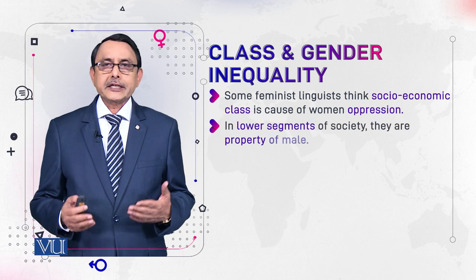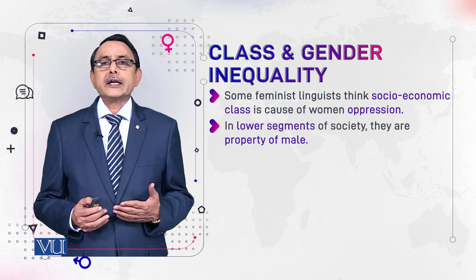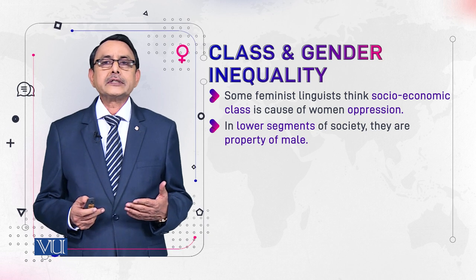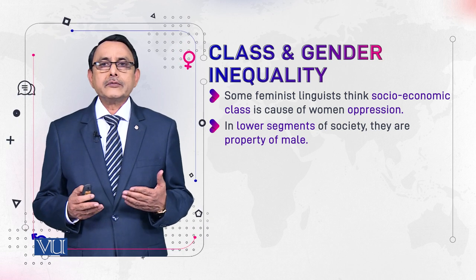Lower class segments of society — the class of women which belong to working people — are very poor and downtrodden segments of society. In those classes, women are taken as property of males. Males have every right to control them, to control their activities, behaviour, etc.